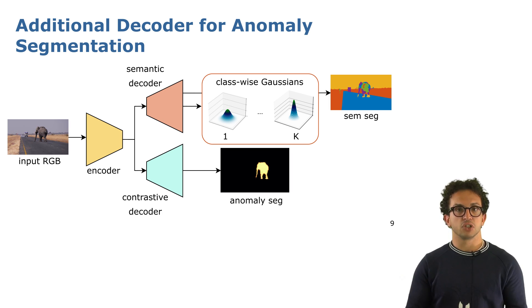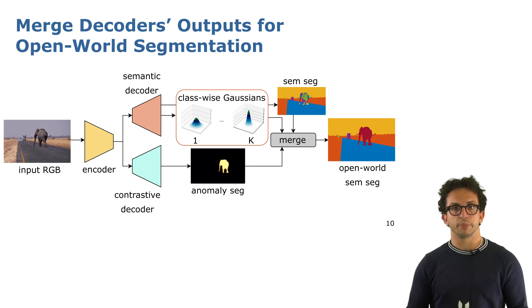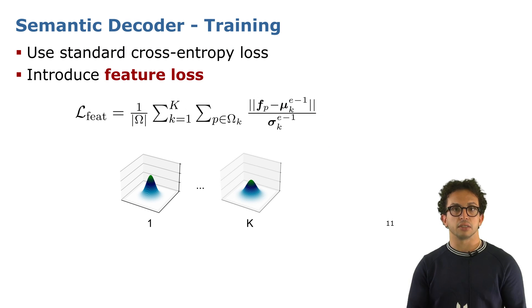The results of these two decoders are put together to obtain the final open-world semantic segmentation. Now I'm going to give you more details on these two decoders, first the semantic decoder.